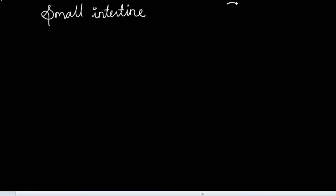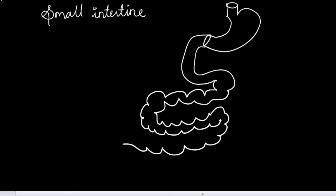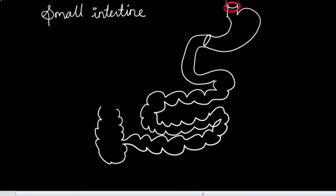Good morning everyone. With the continuation of anatomy of stomach, today we are going to deal with some general features of small intestine. This end is the cardiac end where the lower end of esophagus gets connected with the upper end of the stomach, and this is the pyloric end of the stomach as we had discussed in the previous video. From here the small intestine will get started.